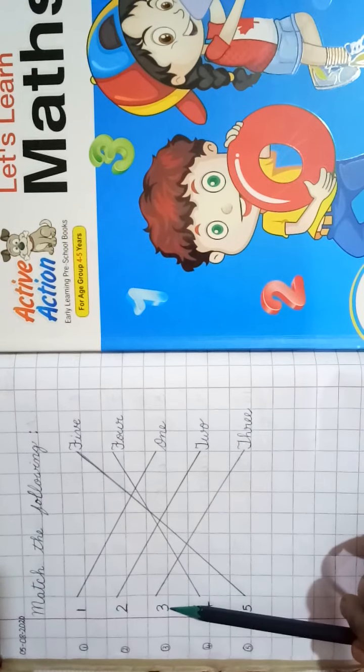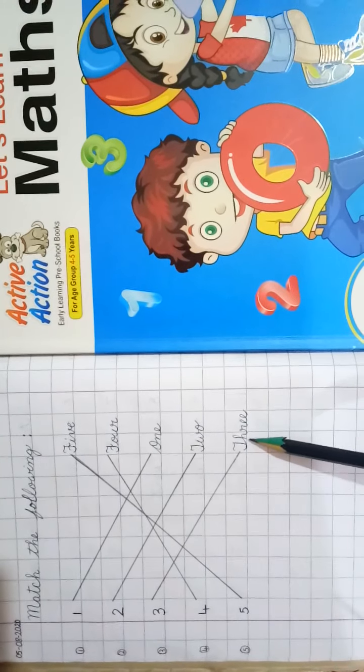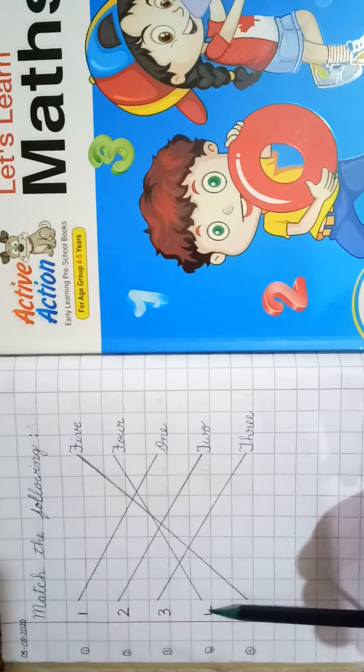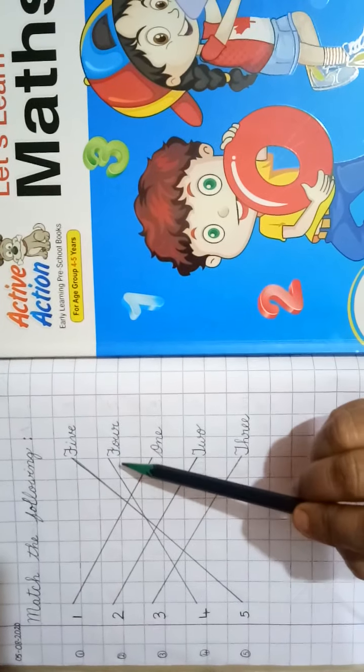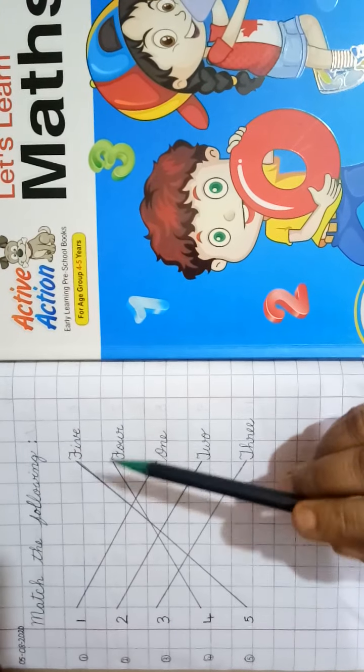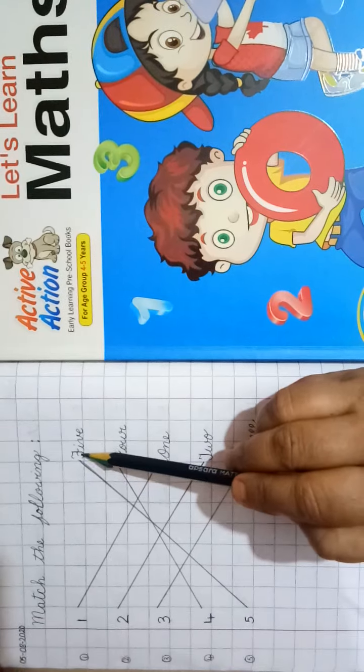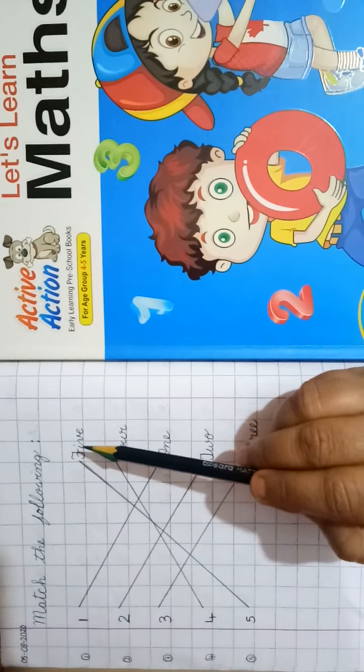Number 3 with number name T-H-R-E-E 3. Number 4 with number name F-O-U-R 4. Number 5 with number name F-I-V-E 5.